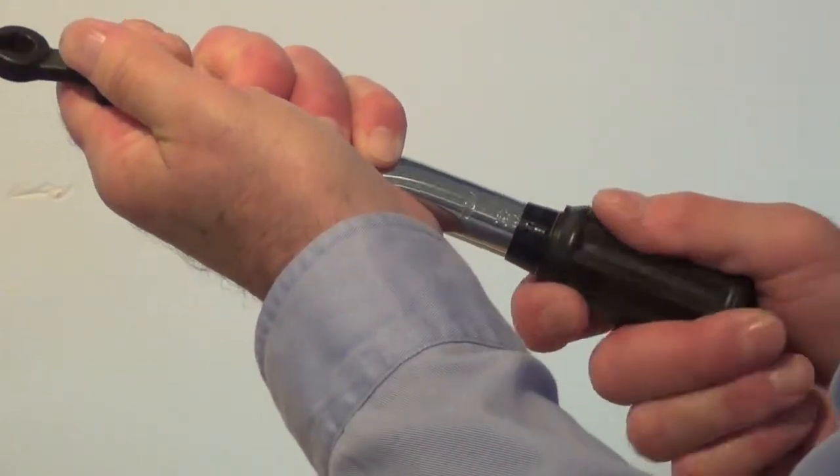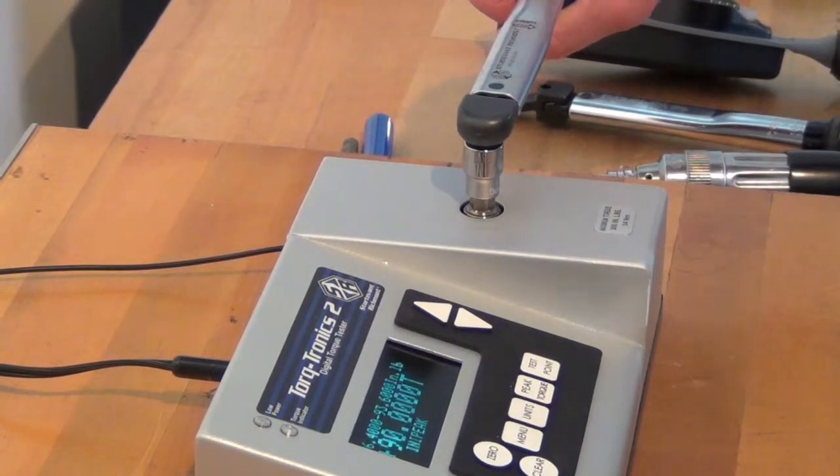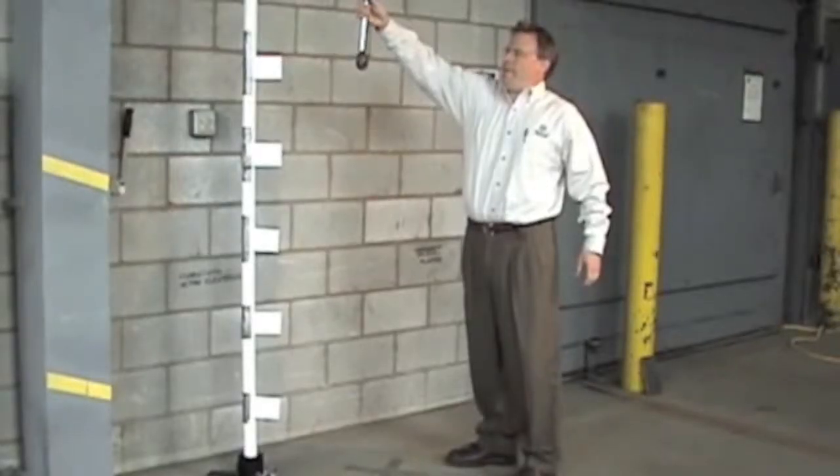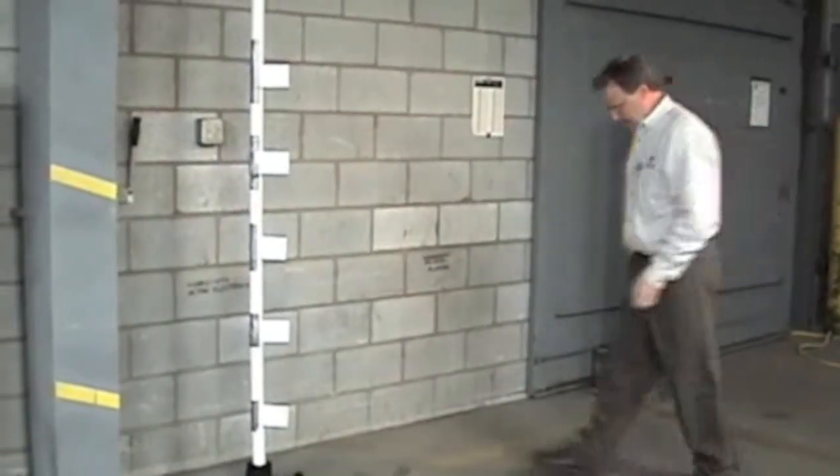More companies have gone to daily torque verification, and with good reason. Just calibrated tools can mysteriously go out of spec in an instant, being dropped, pulled over capacity, being used and abused. It just happens.